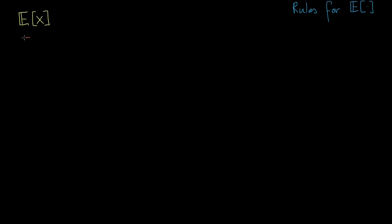Suppose I asked you to give me the expected value — the long-run average — of just a regular old number, like 3. This number doesn't really have a probability distribution; it's always going to be that value with probability 1. So if I ask for the long-run average of something that occurs certainly, it's just going to be that number, a.